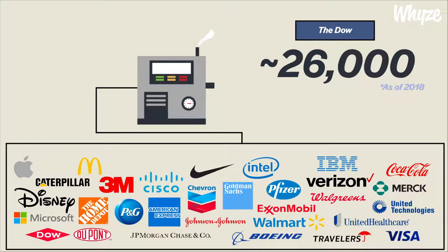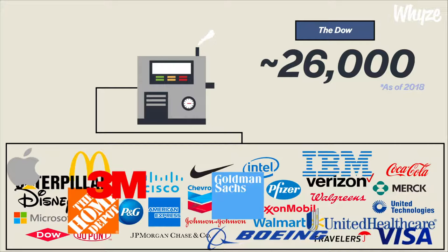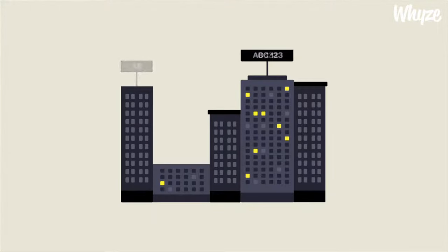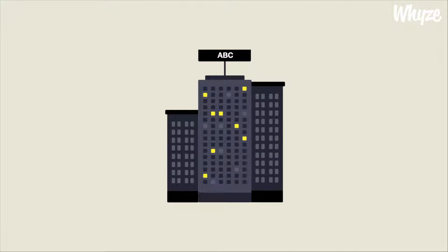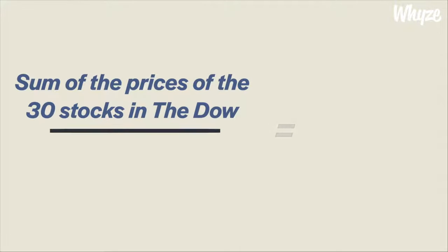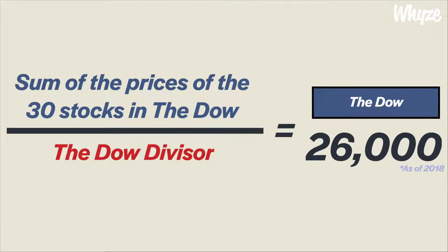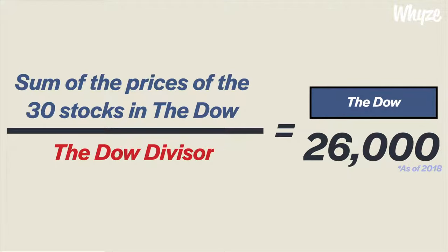Not all 30 stocks have the same influence on the value of the Dow. As a price-weighted index, the stocks in the Dow with the highest stock prices weigh more heavily on the value of the index. For example, a price change in a $100 stock will have more effect on the value of the Dow than an equal price change in a $50 stock. With companies splitting their stock, merging with other companies, selling parts of their business, and sometimes being removed from the Dow, the Dow isn't just a straightforward calculation. The value of the index is calculated by adding the prices of the 30 stocks and dividing by a set number that has become very small over time, which is why the Dow is represented by such a large number.